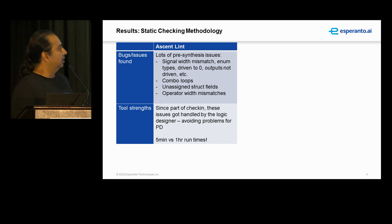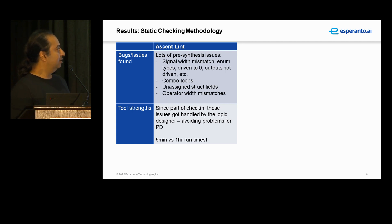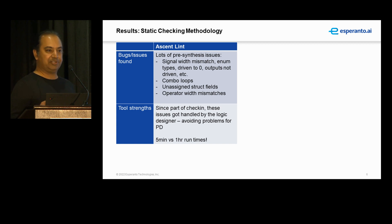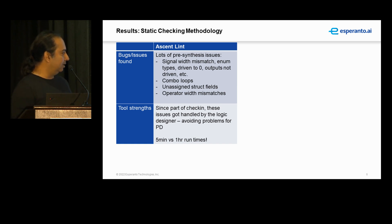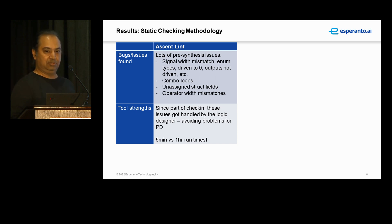Sent lint was actually very helpful. It found a lot of the things that you would expect to find — signal width mismatches, enumeration types driven to zero. So many of these things your synthesis tool will find; it'll give you an error and crash. The physical design guy comes to you and says, 'Hey, fix this.' So this is actually extremely useful, and obviously handling them up front is the best thing. We were able to do this because Sent lint runs in about five minutes versus another tool we use that took more like an hour for CDC.